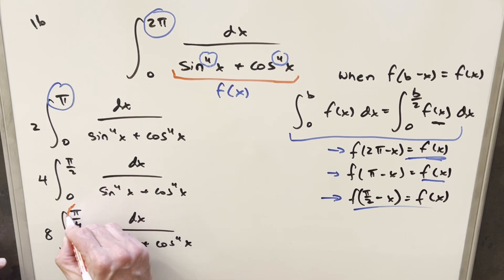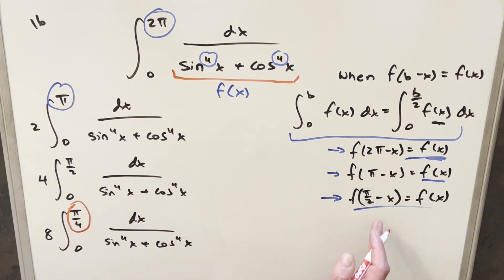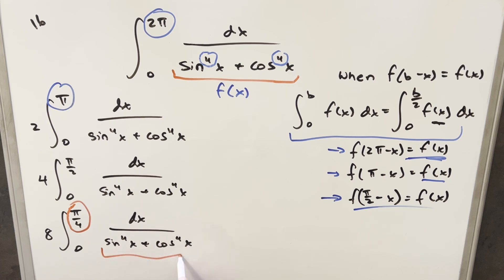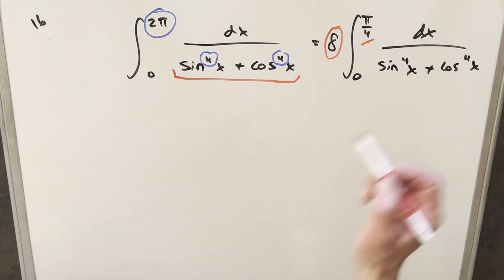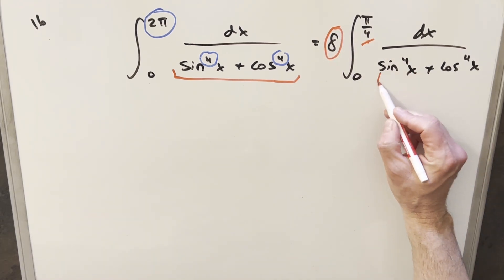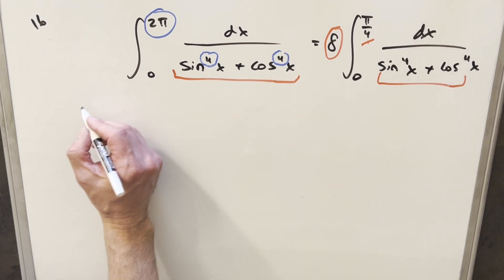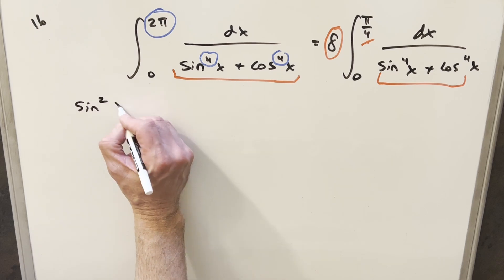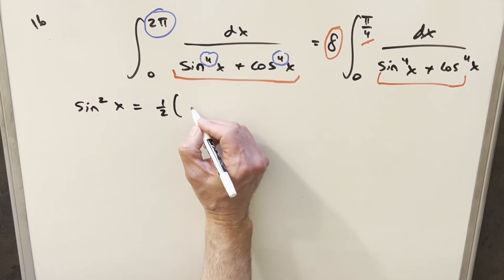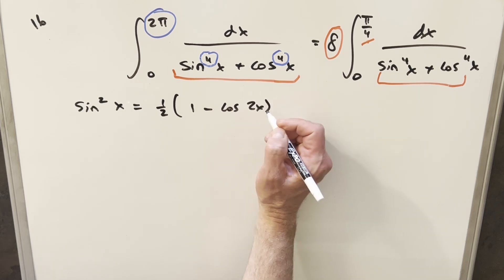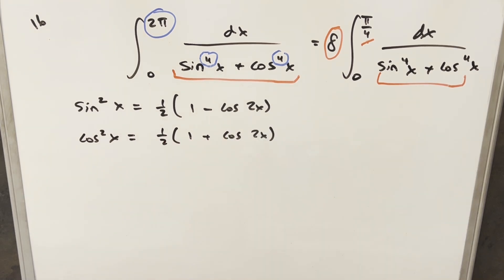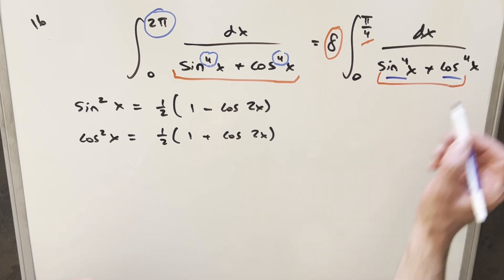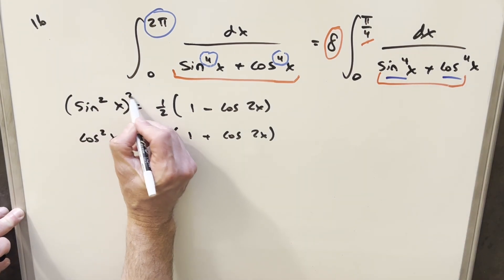At this point we stop, since b = π/4 doesn't satisfy our identity. Now we actually deal with the integral. Using power reduction identities: sin²x = ½(1 − cos2x) and cos²x = ½(1 + cos2x). We want sin⁴x + cos⁴x, so we square everything. Squaring and multiplying out: we get ¼(1 − 2cos2x + cos²2x) + ¼(1 + 2cos2x + cos²2x).